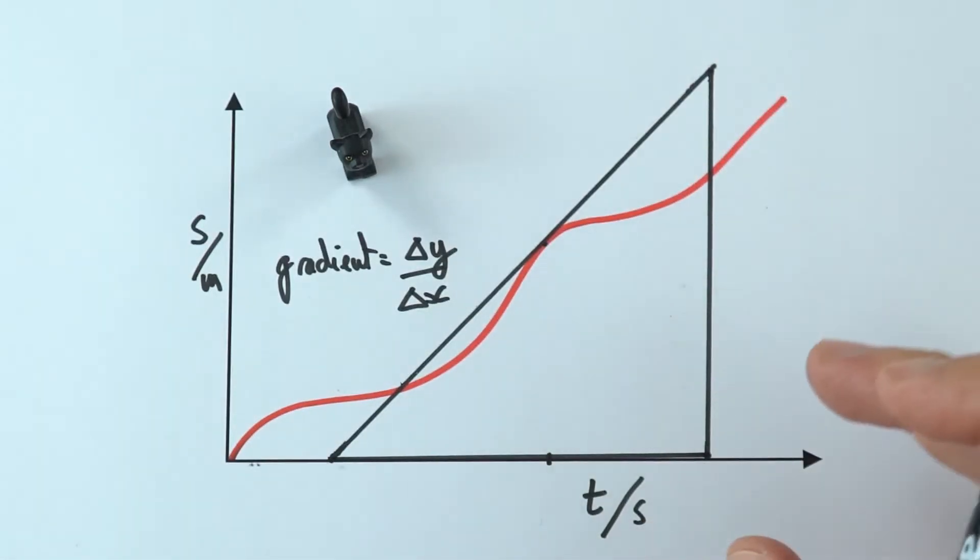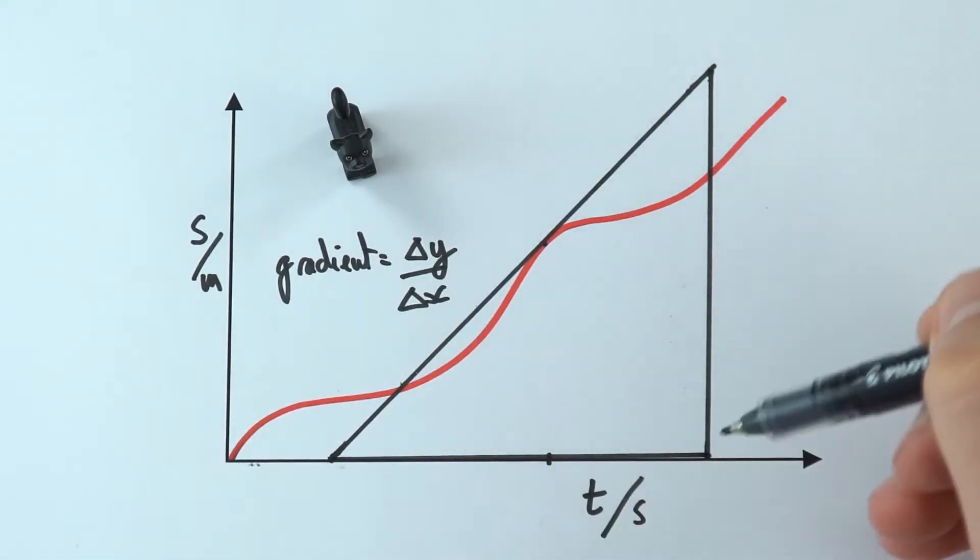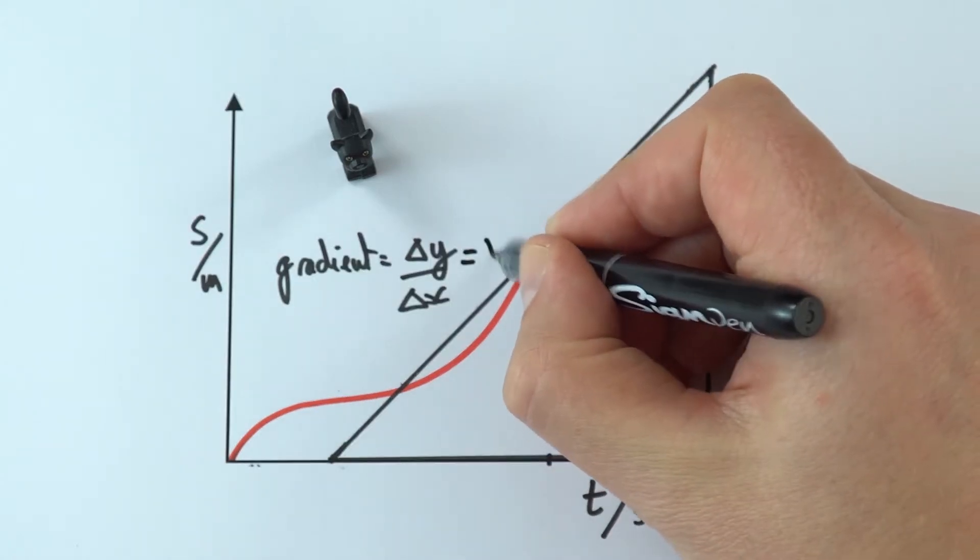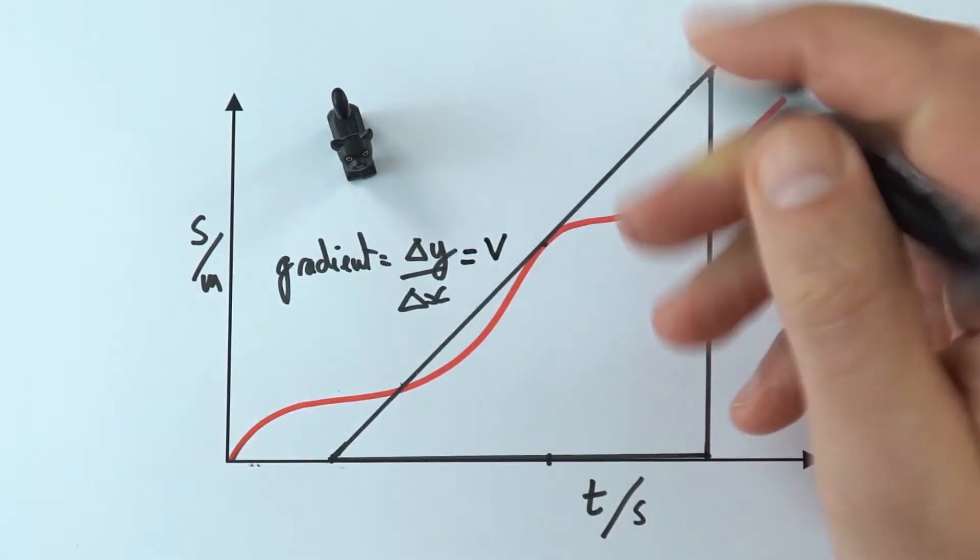So you take your coordinates, you read the data off the graph, and then you just look at the change in y value divided by the change in x value. And that's equal to your gradient. And this is then equal to the speed of the object at that instantaneous time.